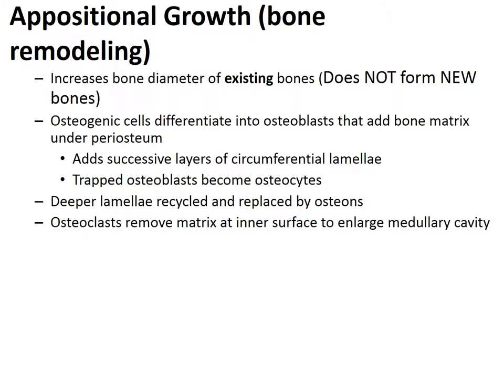The other type of bone remodeling is appositional growth, where bones grow in width or diameter. Osteoprogenitor cells beneath the periosteum differentiate into osteoblasts and form new osteons on the external bone surface. While bone is being added to the outer surface, osteoclasts are removing and recycling lamellae at the inner surface. As a result, the medullary cavity gradually enlarges as the bone increases in diameter. Appositional growth is important in increasing the diameter of existing bones but does not form the original bone.